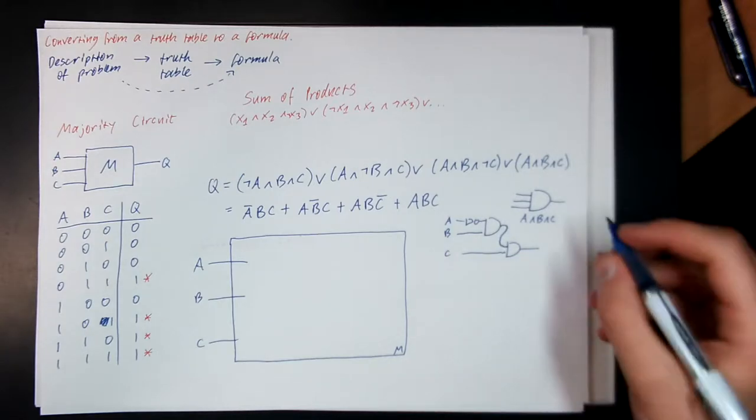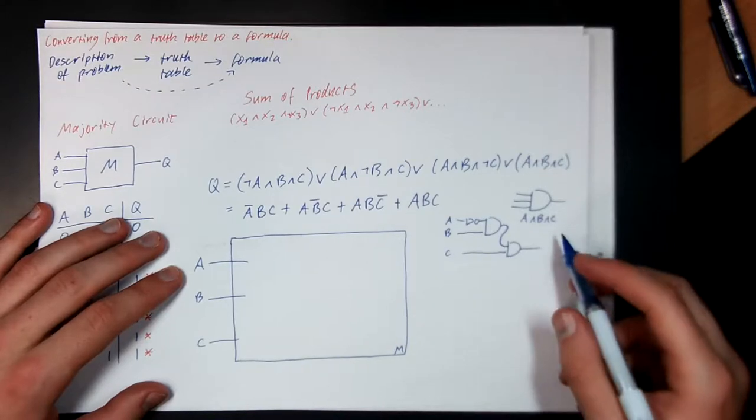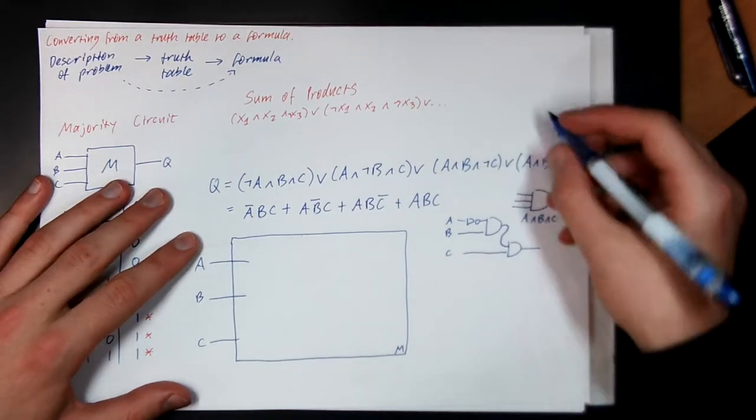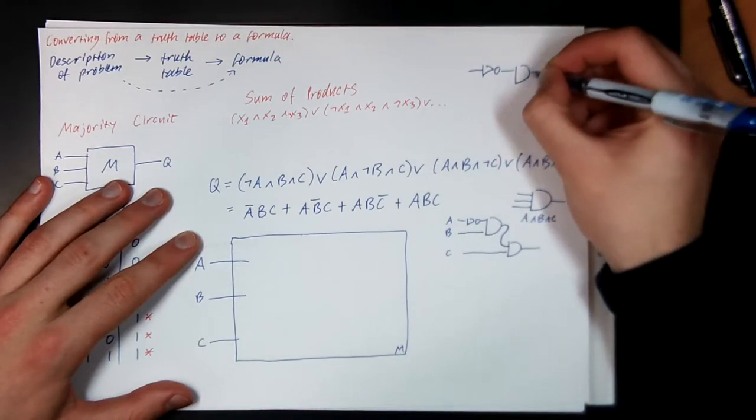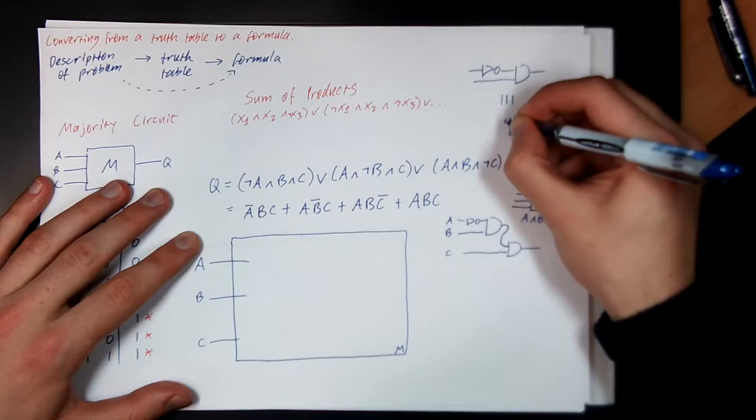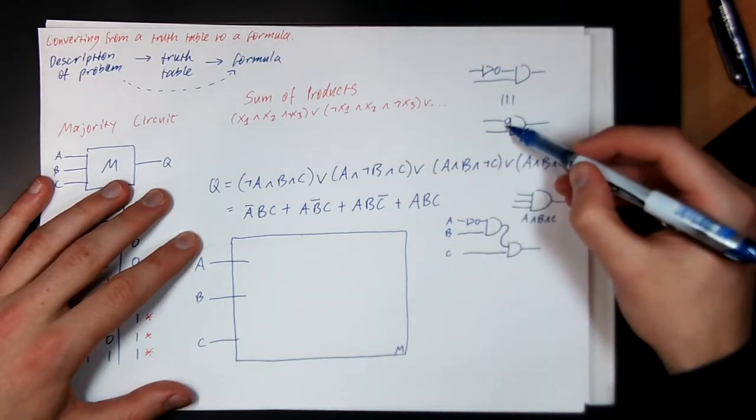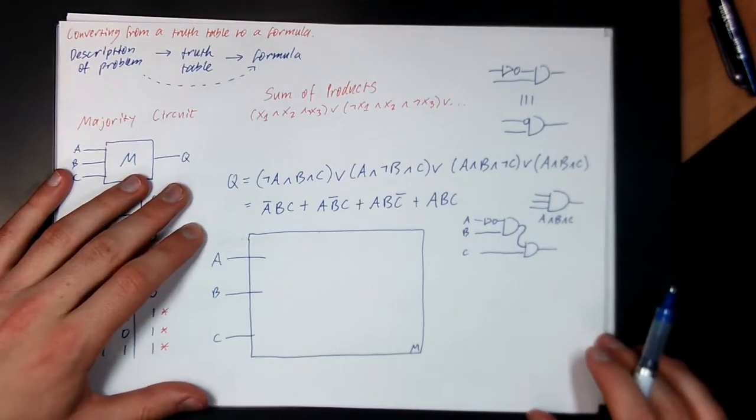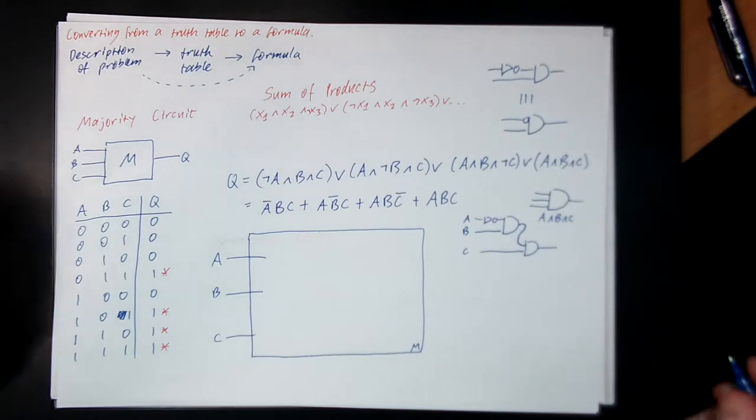Another thing we can do is we can also add little circles to the inputs or outputs of gates to represent a negation. So rather than drawing a NOT gate and then an AND gate separately, I can just draw a little bubble on one of the inputs like this. And so what this means is you should negate this input first before passing it to the AND gate. It's just another convenient shorthand we can use to make drawing circuit diagrams a little bit easier.